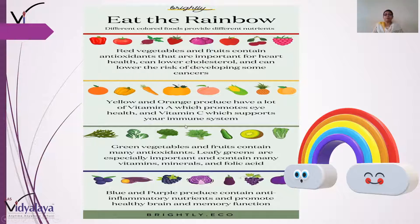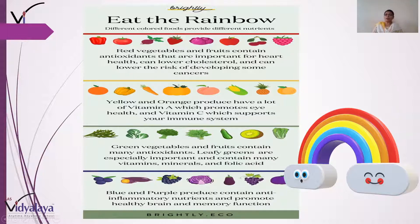Agar green ki baat karein, toh green vegetables and fruits contain many antioxidants. Leafy greens are especially important and contain many vitamins, minerals, and folic acid — yaani hari pattedaar sabziyan aur is tarah ke phal khane se bhoat saari vitamins, minerals, aur folic acid milti hain. Aur last mein blue and purple fruits and vegetables — blue and purple produce contain anti-inflammatory nutrients and promote healthy brain and memory function. Toh apni memory aur brain ko healthy rakhna chahte hain toh khoob saare blue aur purple color ke fruits aur vegetables khaiye.